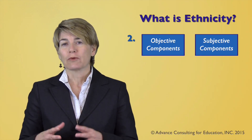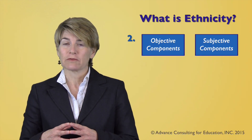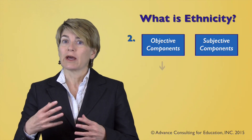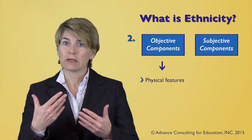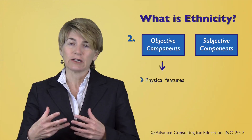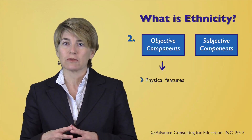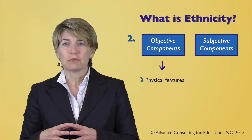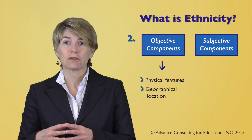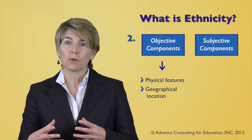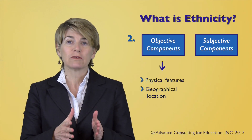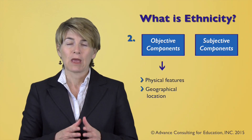If we're looking at the objective components of ethnicity, this might be someone's physical features — what they look like: eye color, skin color, eye shape, hair color, and so on. It might also include the geographical location someone is located in. These are very objective pieces to the definition of ethnicity.